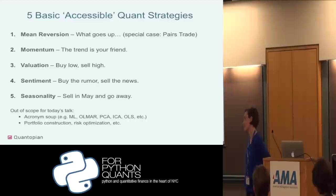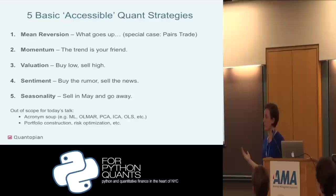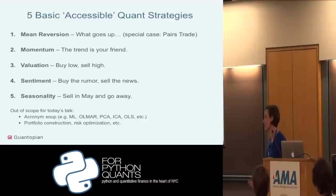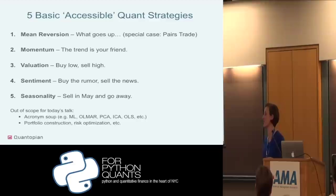We have what I'd call a pretty basic slippage model — a fixed slippage model and a volume share slippage model. It's all open source. Sometimes people say that's amazing, and other people say that's totally JV and I should look at my slippage model. What I say is, great, write it, put it on GitHub, and we'll pull it in. What I tell people who want to trade with their IB account is use your IB demo account, and then trade it with a small amount of money and get that data quickly.